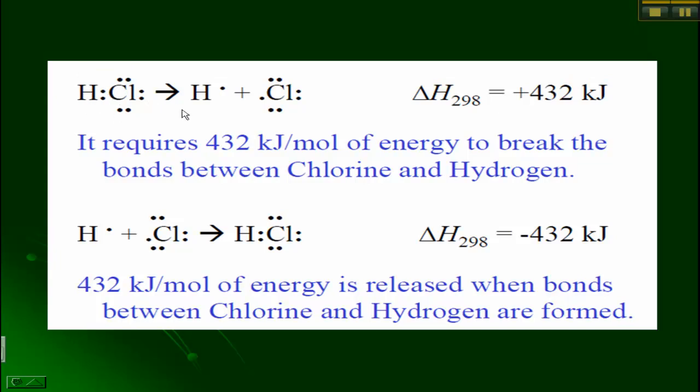If it breaks apart into its hydrogen and its chlorine, then it requires 432 kilojoules of energy to break those bonds. Now if we start out with hydrogen and chlorine and we form HCl, then it releases 432 kilojoules when it forms. So the bond energy is the same regardless of which way you're going. The only difference is the sign.